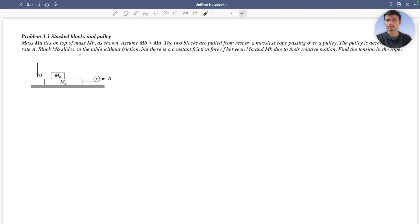The block mb slides on the table without friction, and there is a constant friction f between ma and mb due to their relative motion. Find the tension in the rope.